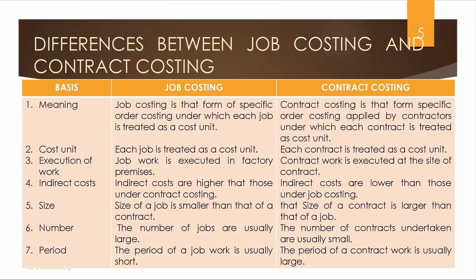Next is Execution of Work — comparing Job Costing and Contract Costing. In Job Costing, work is executed in the factory premises, but in Contract Costing, work is executed at the site of the contract. Regarding indirect cost: in Job Costing we add more indirect cost, whereas in Contract Costing, indirect cost is less and direct cost is higher.